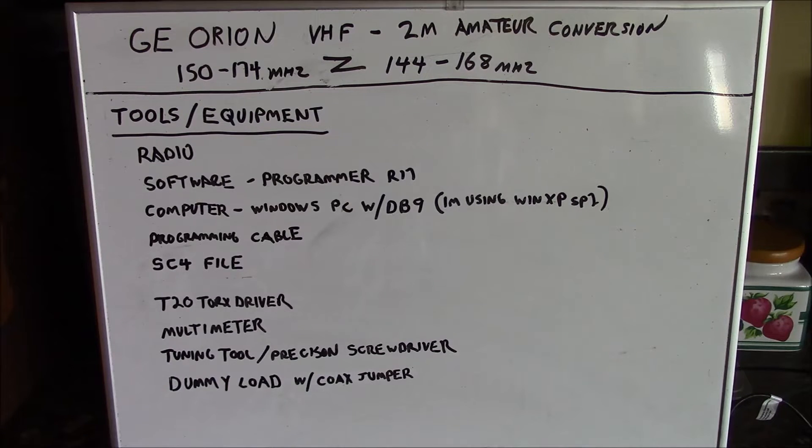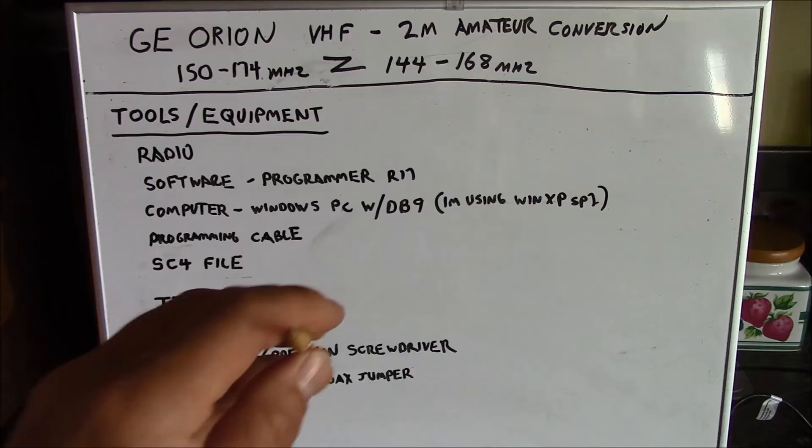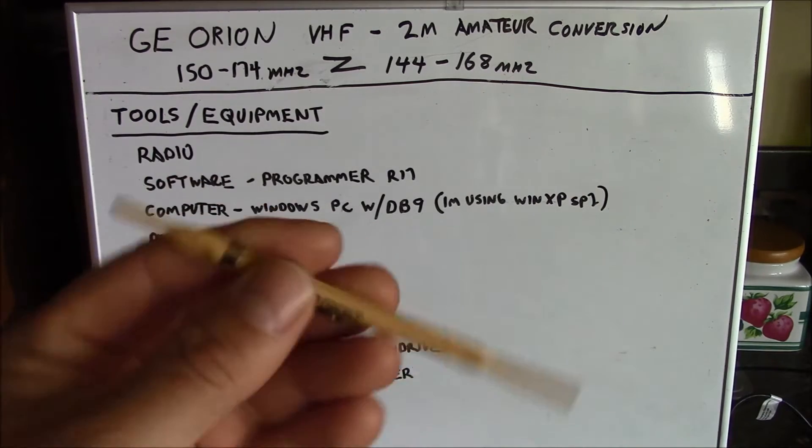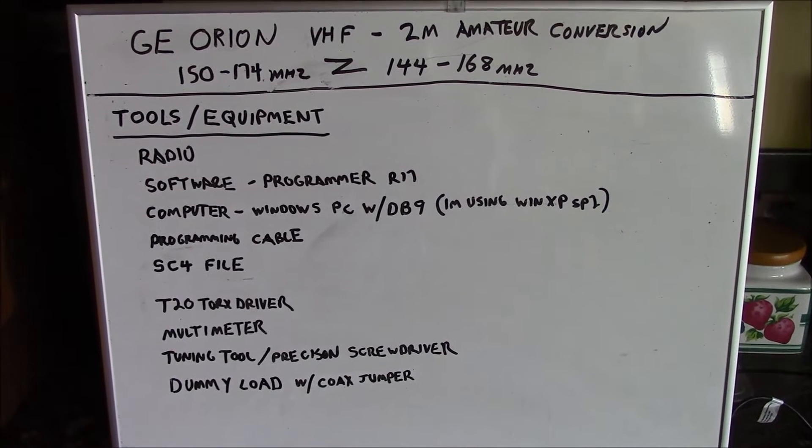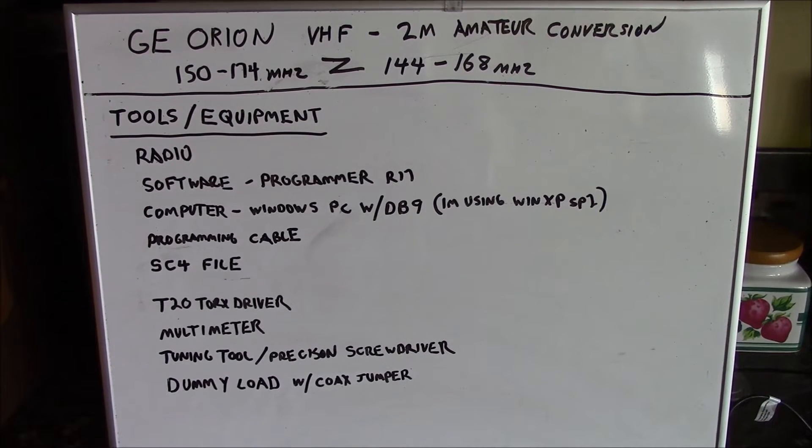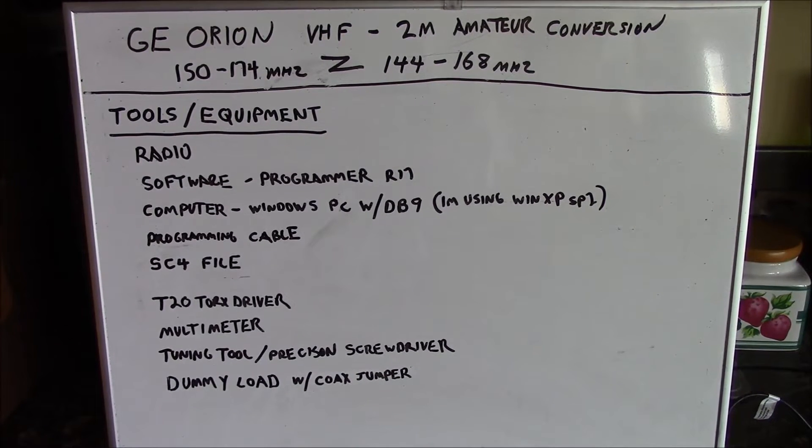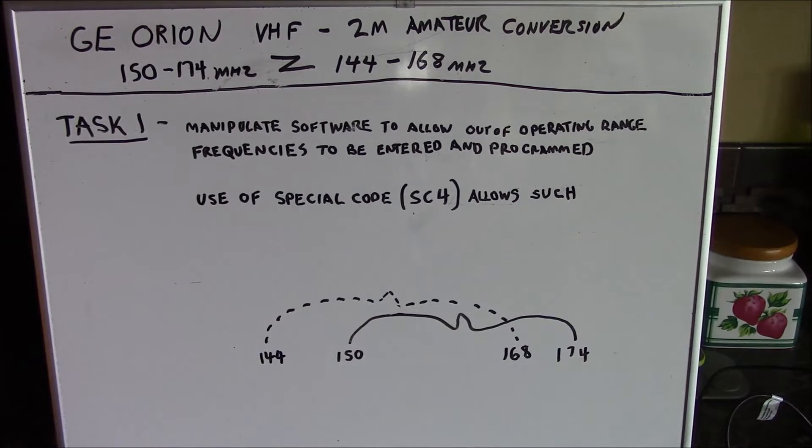A multimeter, or DC voltmeter of some kind. A tuning tool or precision screwdriver. This is what I use for a tuning tool. It's just a slotted screwdriver with an insulated handle, and these are handy. Failing having one of these, you could certainly use a precision screwdriver. And you will need a dummy load with a coax jumper because spraying your neighborhood with random RF just isn't cool. Now that we have that out of the way, we can begin.